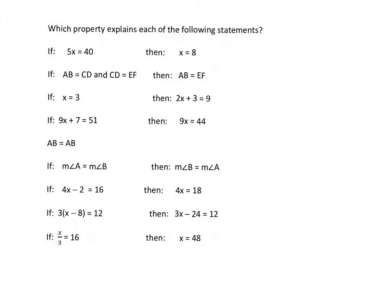So this first statement, 5x equals 40, we then get x equals 8. How did we get that? We basically divided both sides by 5 to achieve this. So this is the division property of equality, and I'm going to abbreviate property of equality.